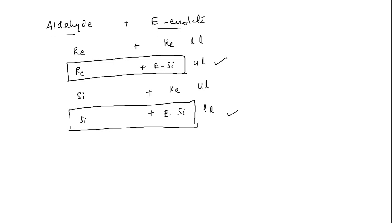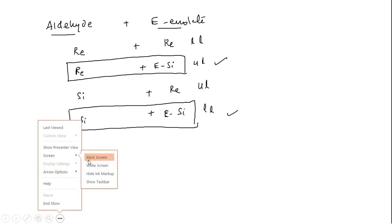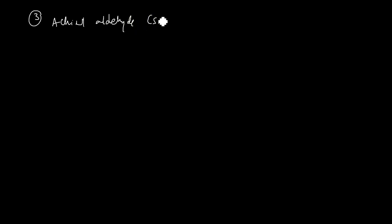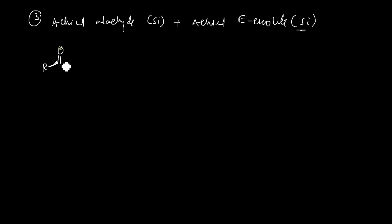We will now discuss two combinations: the Si-face of E-enolate interaction with the Si-face of aldehyde, and the Si-face of E-enolate with the Re-face of aldehyde. Let us start with the first combination. This is the third possibility — the Si-face of acyl aldehyde interacting with the Si-face of acyl E-enolate. We have an aldehyde treated with E-enolate.